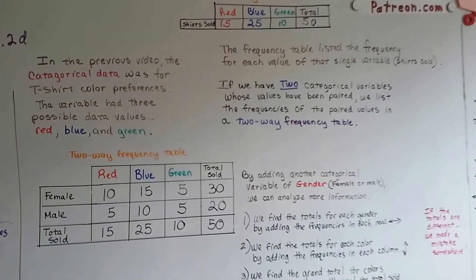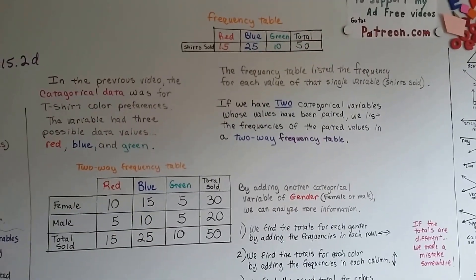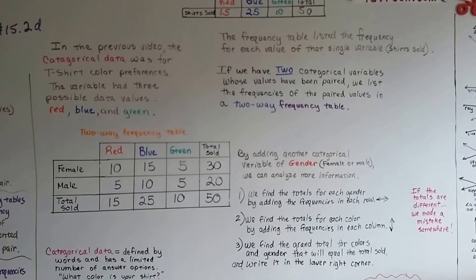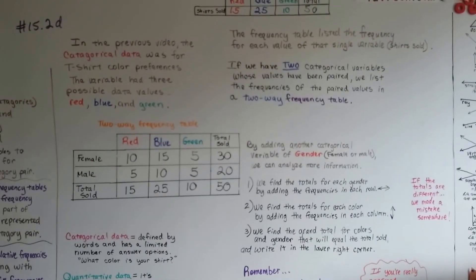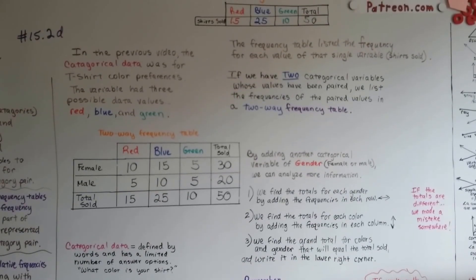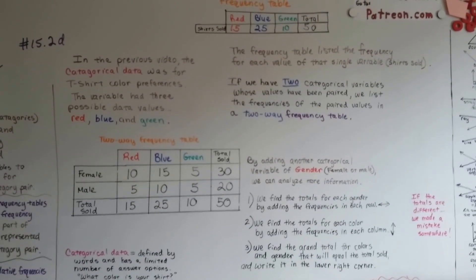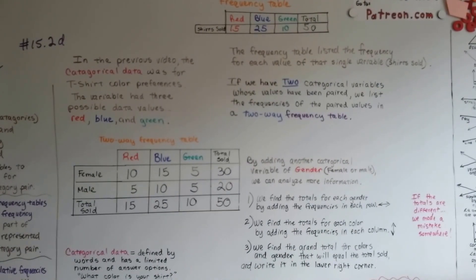We're going to move on and we're going to talk about how to create a two-way relative frequency table. Then after that, we're just going to analyze the information that we've learned. And then that's the end of eighth grade math. So I hope I'll see you in 15.2e. We're almost done.